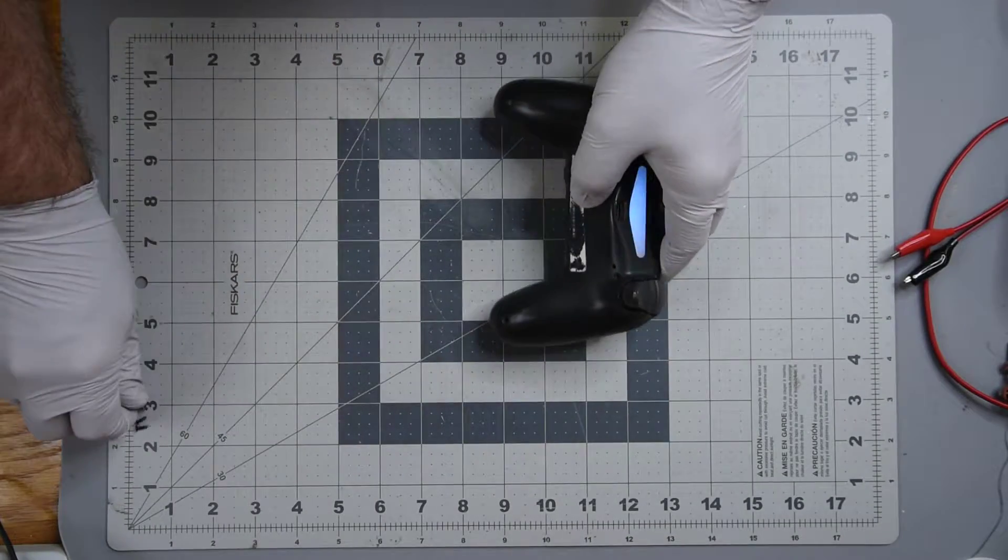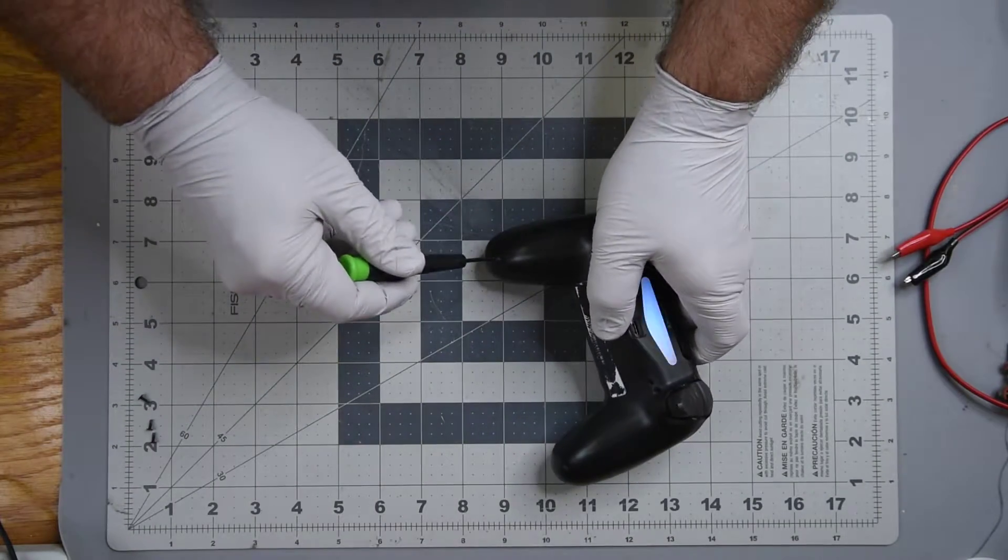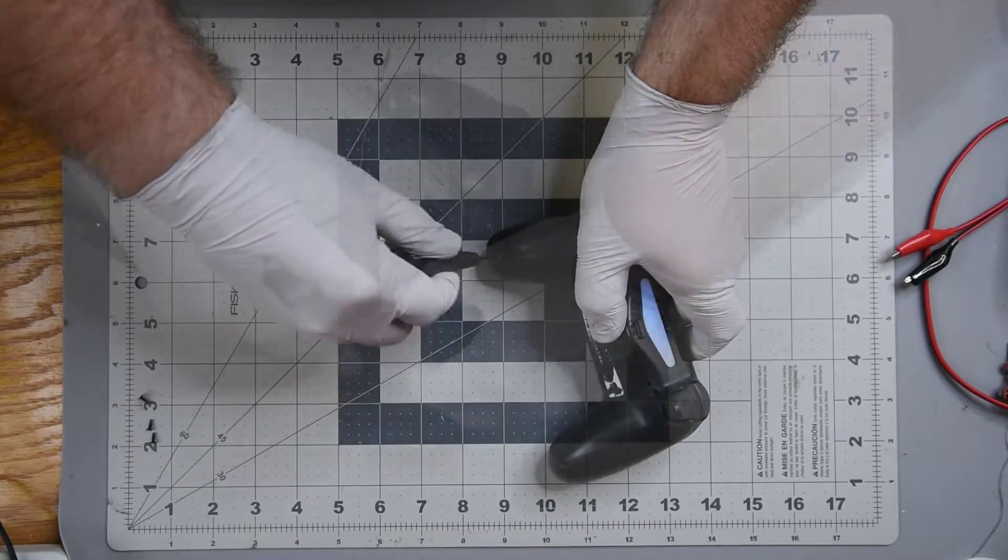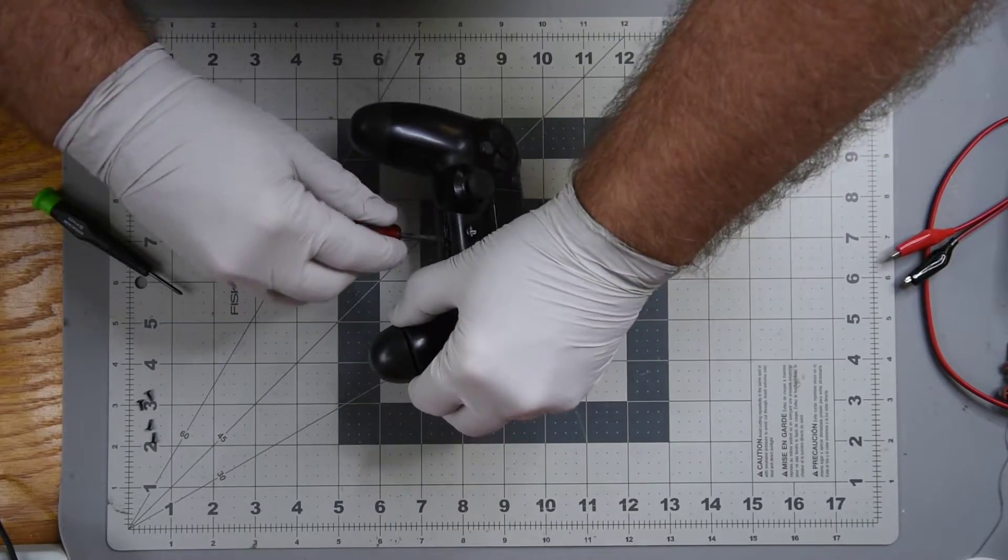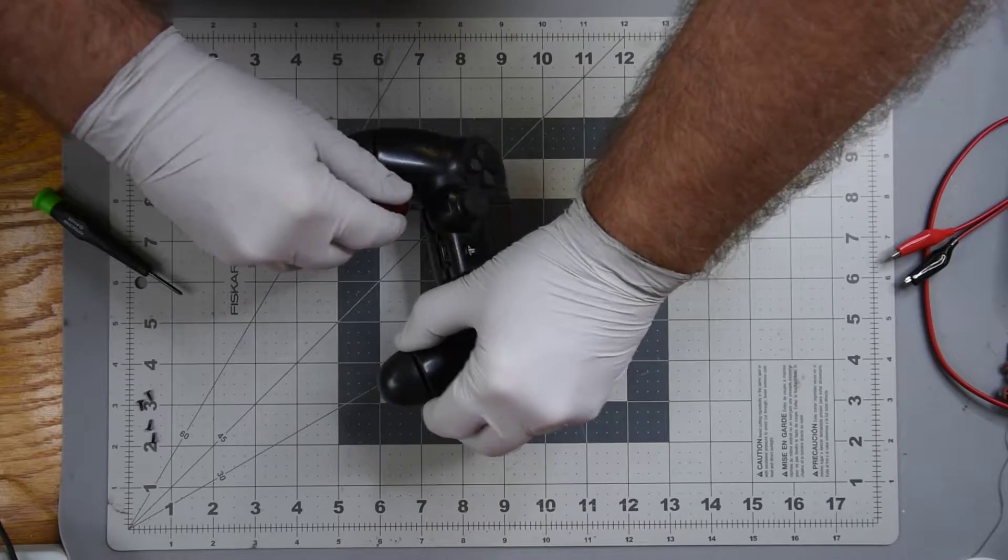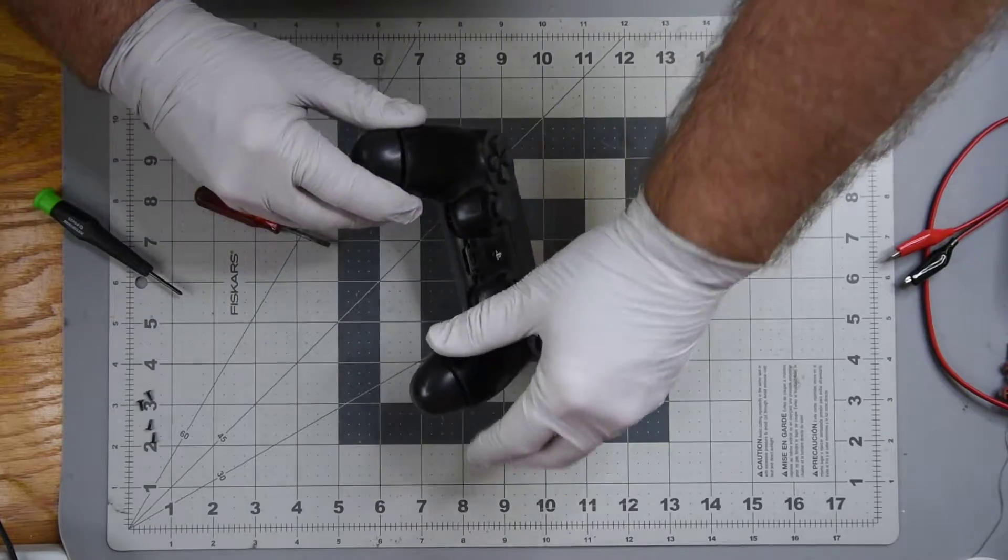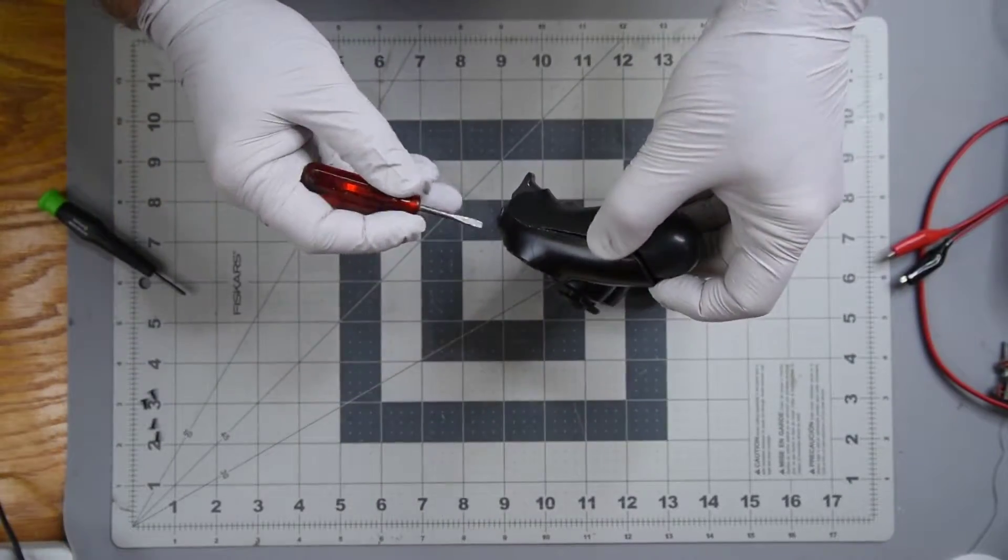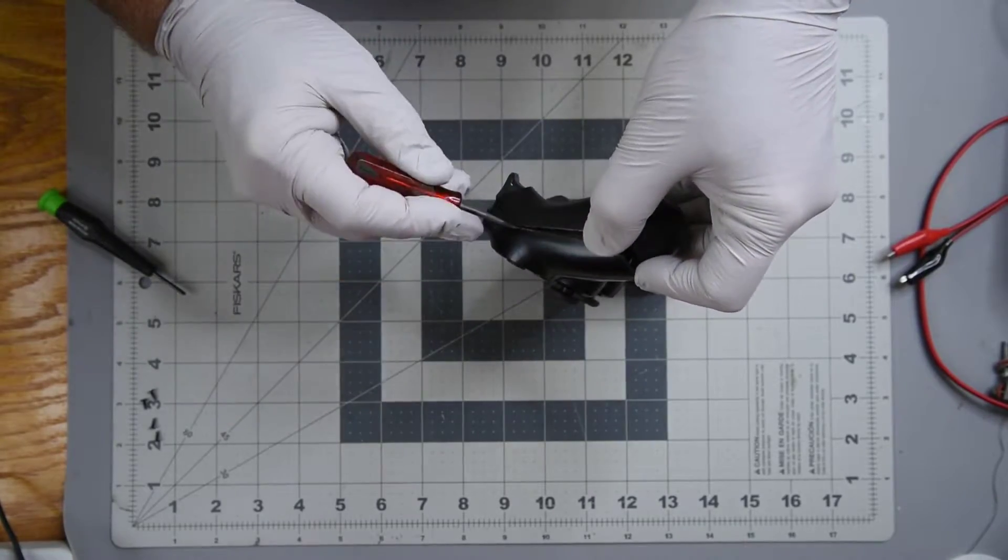This controller has been apart quite a few times, so it is a lot easier for the shell to separate than one that has never been apart. The plastic clips on the sides near the trigger buttons and the ones near the back center are quite robust at holding it together for the first two or three disassemblies.